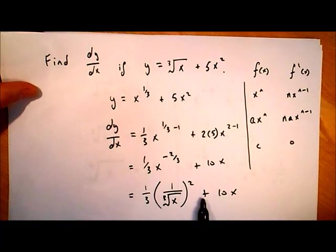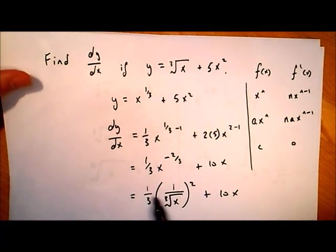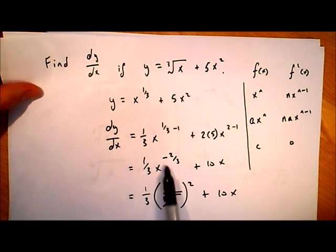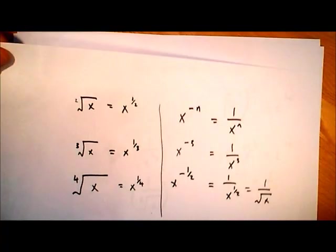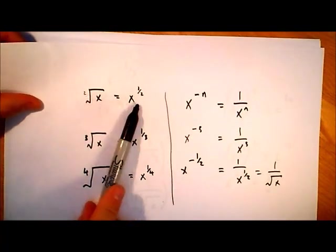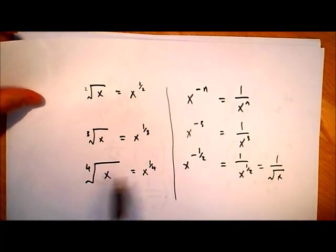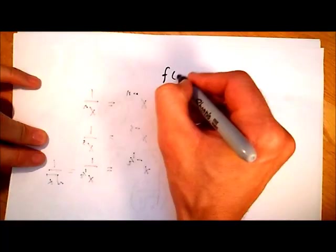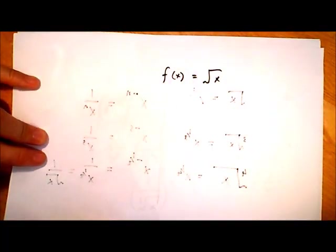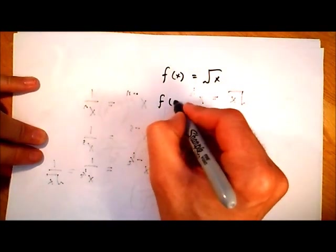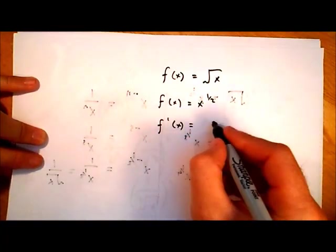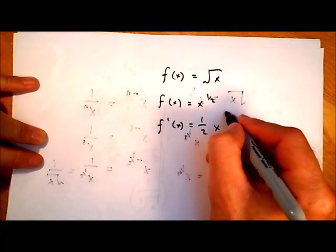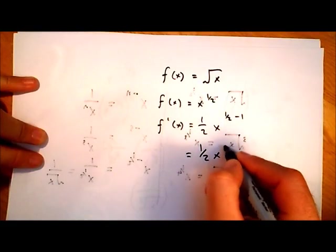So we could rewrite our answer as one third times one over the cube root of x squared, plus 10x. Does that look a little bit nicer? Possibly — it depends on preference. Some people would prefer the index form, some people the root form. The most important thing from all of this: the square root of x is x to the power of a half, the cube root of x is x to the power of a third, the fourth root is x to the power of a quarter. So if asked to differentiate the square root of x, rewrite it as x to the power of a half first, then differentiate using the power rule to get a half x to the power of minus a half.